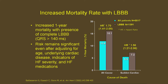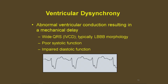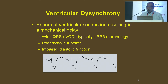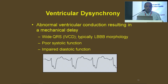Increased mortality rate is seen in patients because of LBBB. LBBB produces a wide QRS complex. Patients with LBBB and heart failure have increased mortality and sudden cardiac death. In patients with wide QRS complex, there is ventricular dyssynchrony — mainly interventricular dyssynchrony, intra-ventricular and interventricular. Abnormal ventricular conduction results in mechanical dyssynchrony, wide QRS, typically LBBB morphology.